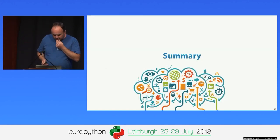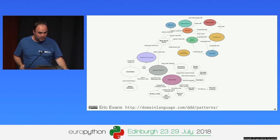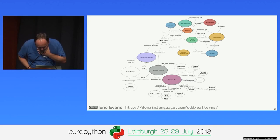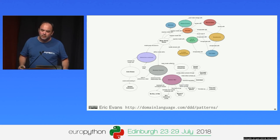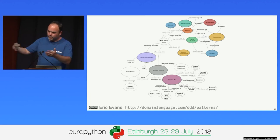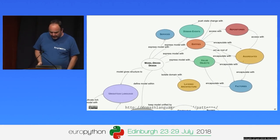Just to summarize: in an hour we've covered quite a big chunk of everything in the DDD book — domain events, entities, value objects, aggregates, factories, repositories, and the layered architecture. We haven't covered services, and there are lots of other things around DDD not on this diagram, like process managers — how do we model long-running processes. We've done pretty well in an hour, I think.